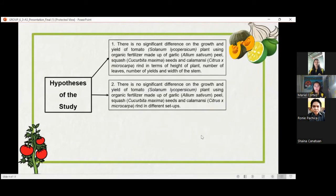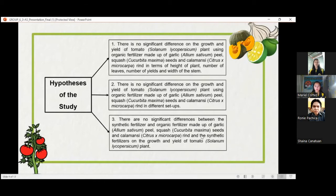Second, there is no significant differences on the growth and yield of tomato Solanum Lycopersicum plant using organic fertilizer made up of garlic Allium Sativum peel, squash Cucurbita Maxima seeds, and calamansi Citrus X Microcarpa rind. Last one, there are no significant differences between the synthetic fertilizer and organic fertilizer made up of garlic Allium Sativum peel, squash Cucurbita Maxima seeds, and calamansi Citrus X Microcarpa rind and the synthetic fertilizers on the growth and yield of tomato Solanum Lycopersicum plant.